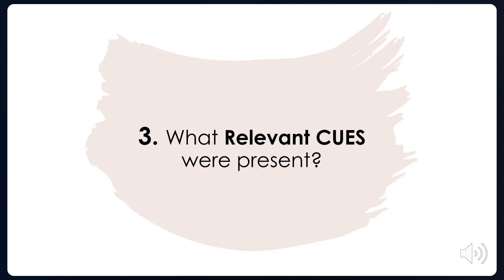So what are cues? Cues are the data we find in our assessment — our look around the room, our touching and listening to the patient, our looking through their labs. Basically, what do you notice? Anything you notice that is out of the ordinary: our observations, our assessment, their health history, report from the previous shift, medical records, labs, diagnostic tests, and the environment in the room or office where we're seeing the patient. Any deviation from normal is a cue we need to look at.